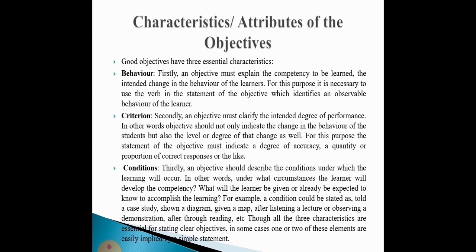Second, criterion: an objective must clarify the intended degree of performance. In other words, an objective should not only indicate the change in the behavior of the student but also the level or degree of that change as well. For this purpose, the statement of the objective must indicate a degree of accuracy, a quantity or proportion of correct responses or conditions.